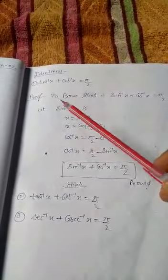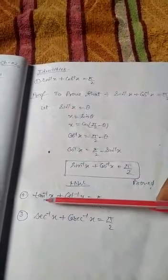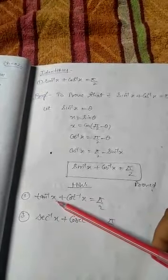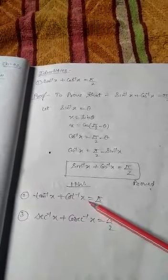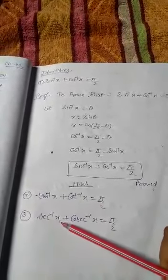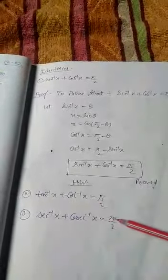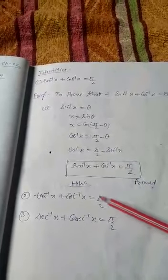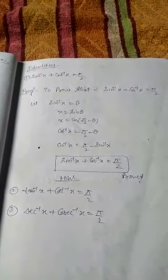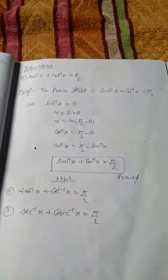Now you can prove other two identities: tan inverse x plus cot inverse x is equal to π/2, and sec inverse x plus cosec inverse x is equal to π/2. This is your homework. I hope you have understood. If any problem, you can ask. Thank you.